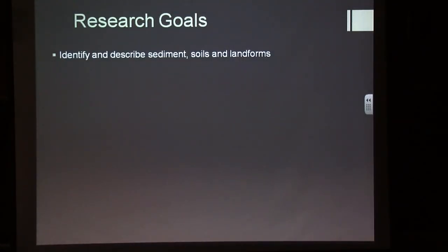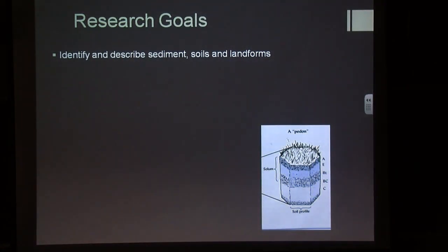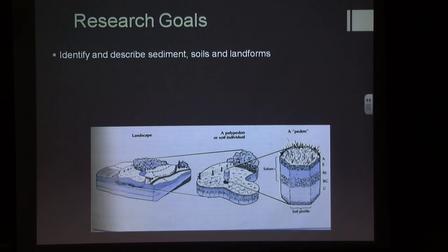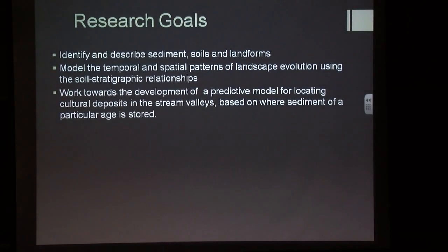Our research goals: through our project we're identifying and describing sediments, soils, and landforms. We describe a small section of soil in great detail and use that to describe the whole soil on that landform. From that, we look at how that landform relates to other landforms in the landscape, modeling the temporal and spatial patterns of landscape evolution using soil stratigraphic relationships. The end goal is to work towards a predictive model — a way to locate cultural deposits based on what sediment package they're in.